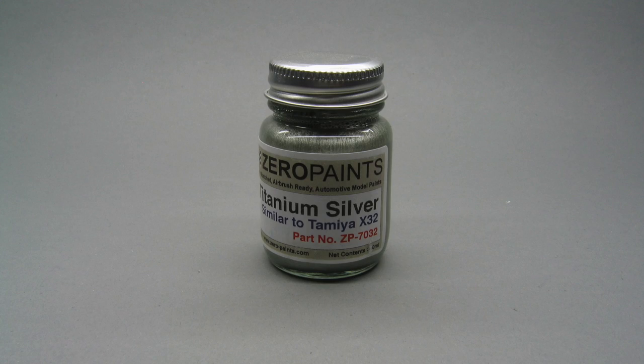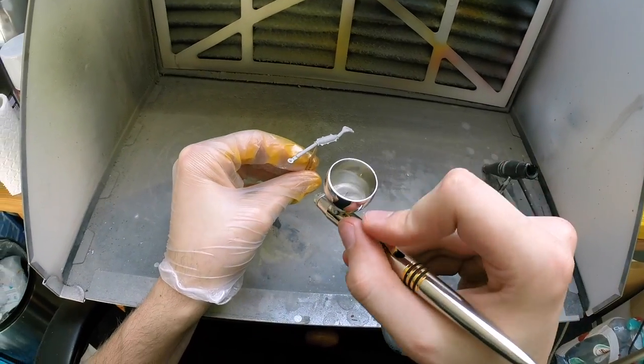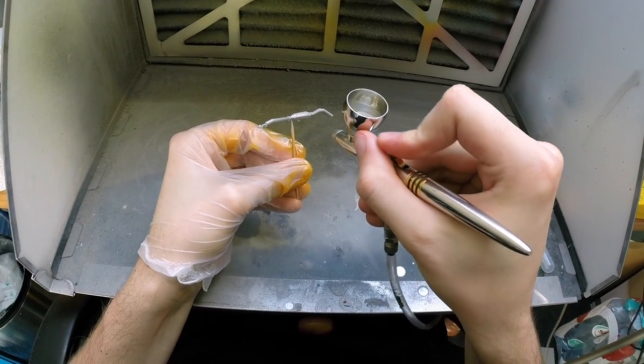After applying two coats of the interior color, I moved on to doing some exhaust and other chassis components in titanium silver.